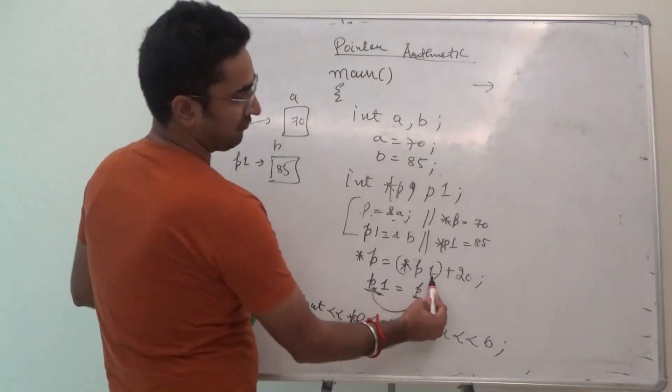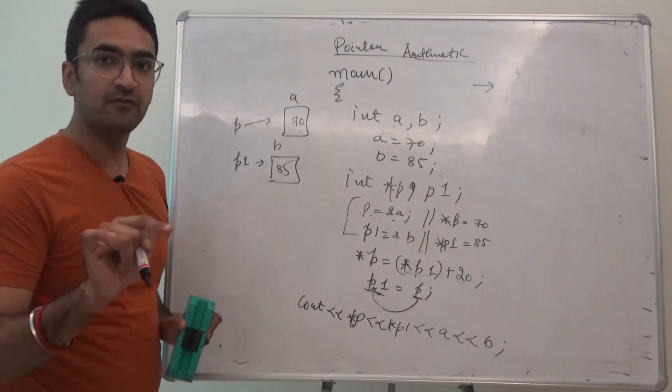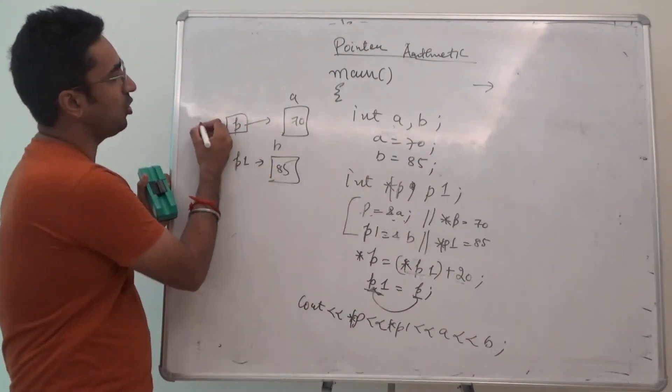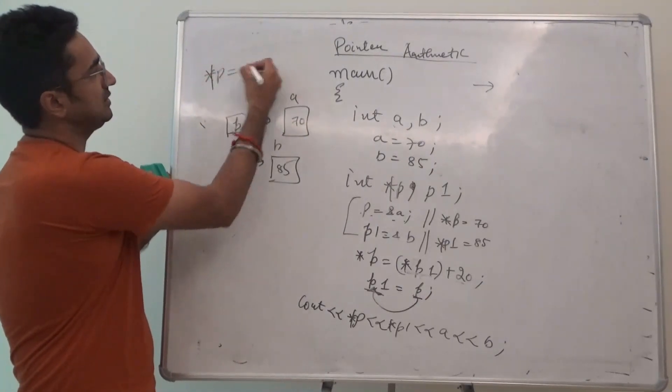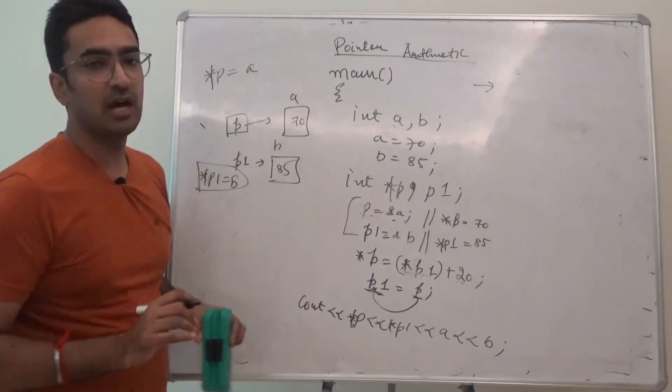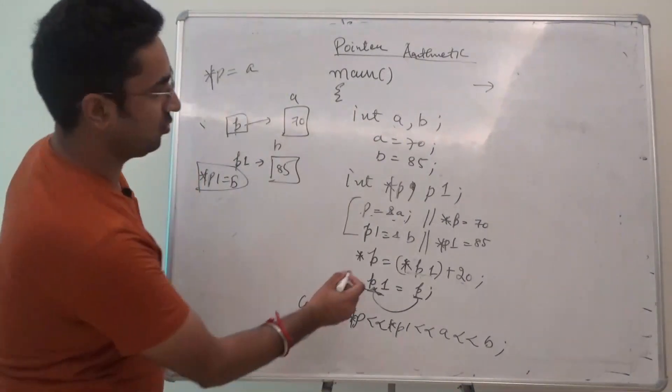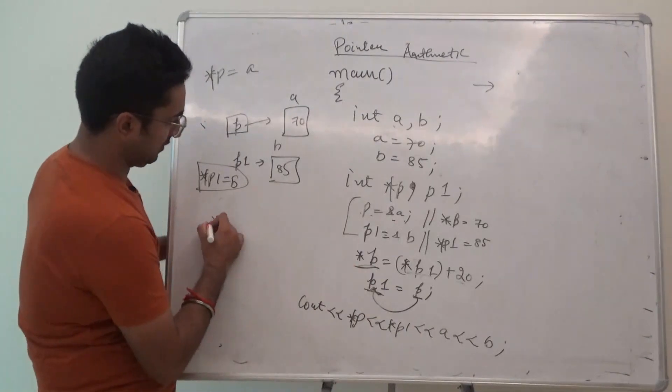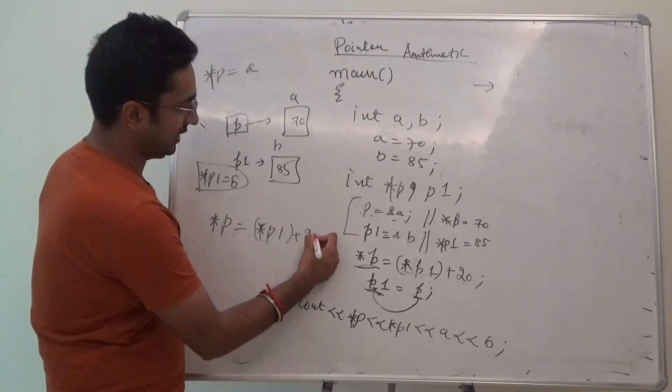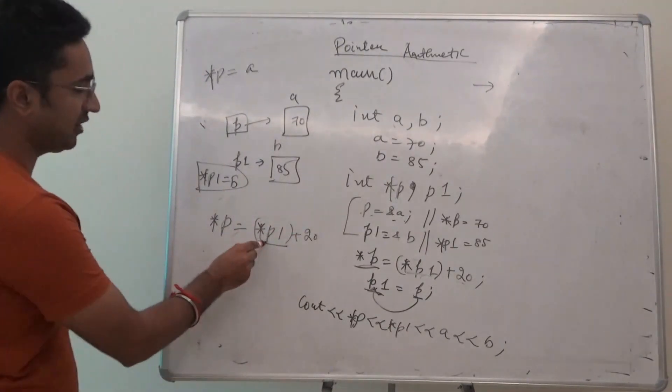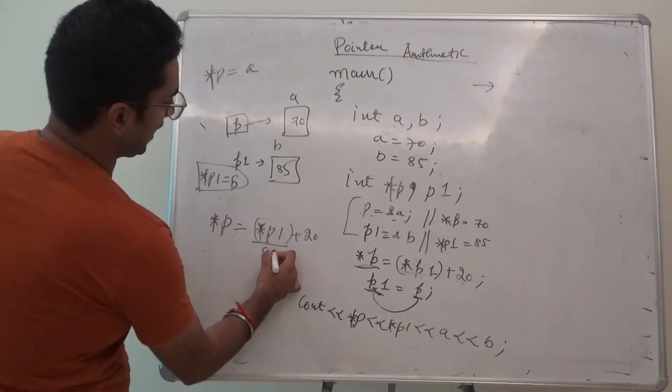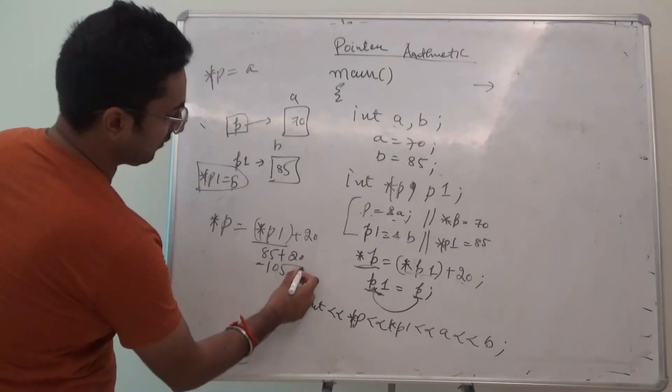Star of p is equal to star of p1 plus 20. So, over here we have to display the value of star of p. So, star of p, we all know that star of p value is a and star of p1 is b. So, these values are already assigned. So, over here I want to take the answer of star of p is equal to star of p1 plus 20. So, it means star of p1. Star of p1 is b. b value is 85 plus 20. That is 105.